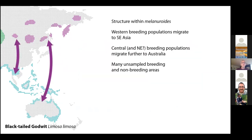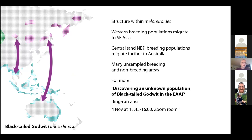The rest of my samples from breeding areas in the central and northeastern part of the breeding range look very similar to non-breeding samples from Australia. Birds from the western non-breeding and breeding areas seem to be connected, and we can't find birds from that area of the flyway in Australia. However, more eastern birds are migrating further and are connected with Australian non-breeding grounds. There are still many unsampled areas with more interesting stories to find.